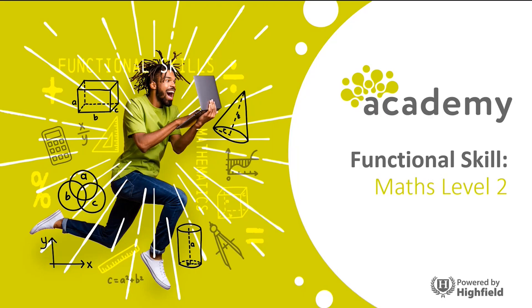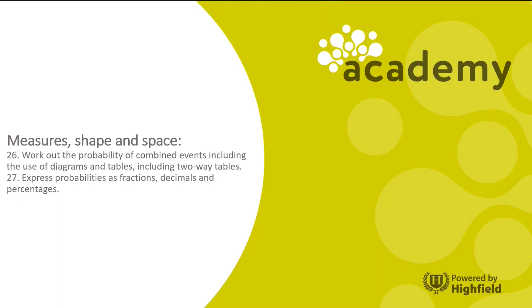Hello and welcome to Functional Skills Maths Level 2. In this session, we'll be looking at measure, shape and space, specifically two areas: working out the probability of a combined event, including the use of diagrams and tables, including two-way tables, and expressing probabilities as fractions, decimals and percentages.